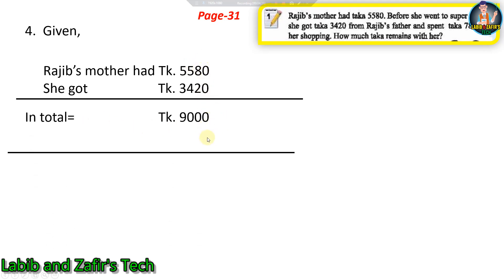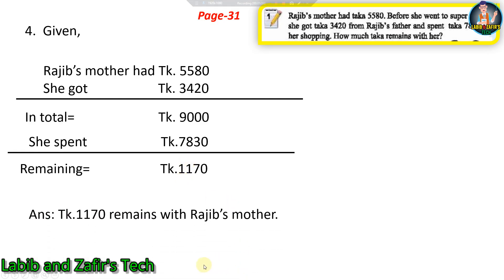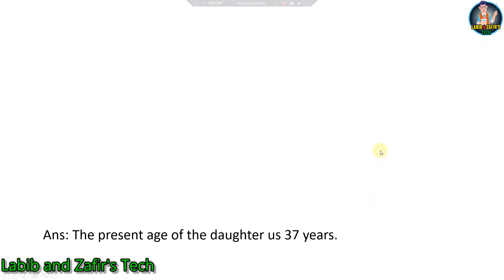Adding taka 5,580 and taka 3,420 gives a total of taka 9,000. Then she spent taka 7,830 for shopping, so we subtract: 9,000 minus 7,830. Working through the subtraction: the remaining money is taka 1,170. Answer: taka 1,170 remains with Rajiv's mother.